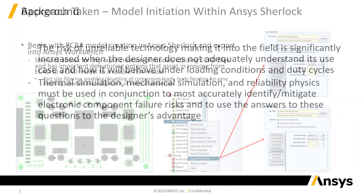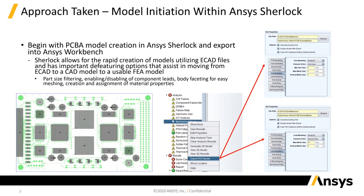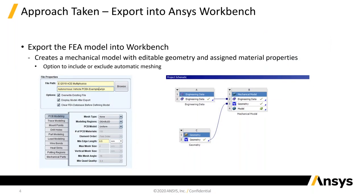We start by setting up a board in SHERLOCK, which you will see in a live demo — how easy that is to do. We export the FEA model directly from the SHERLOCK-created model into ANSYS WORKBENCH and directly into ANSYS ICEPAK inside of WORKBENCH. Inside of WORKBENCH, ANSYS SHERLOCK creates the materials through the engineering data module, brings in the geometry, and then attaches everything together inside of the mechanical model in a single click, pretty much.